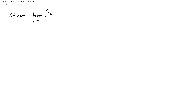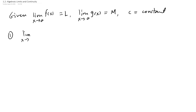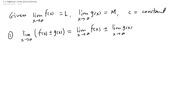In section 1.2 we talk about algebraic limits, their properties, and then we use those to talk about continuity of a function. We start by letting the limit of f(x) as x approaches a equal L, and the limit of another function g(x) as x approaches a equal M, and let c be a constant. The limit as x approaches a of the sum or difference is the sum or difference of the limits — that is, L plus or minus M.